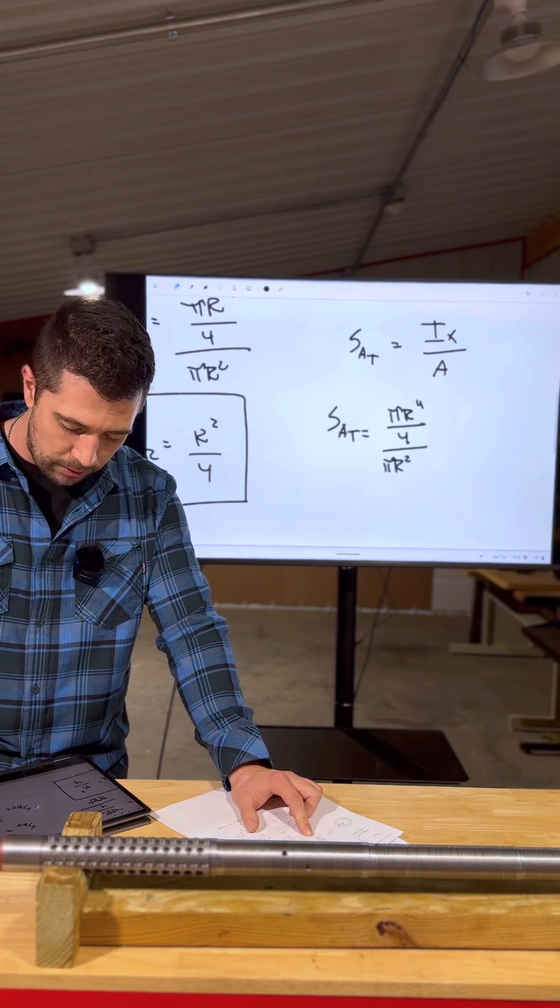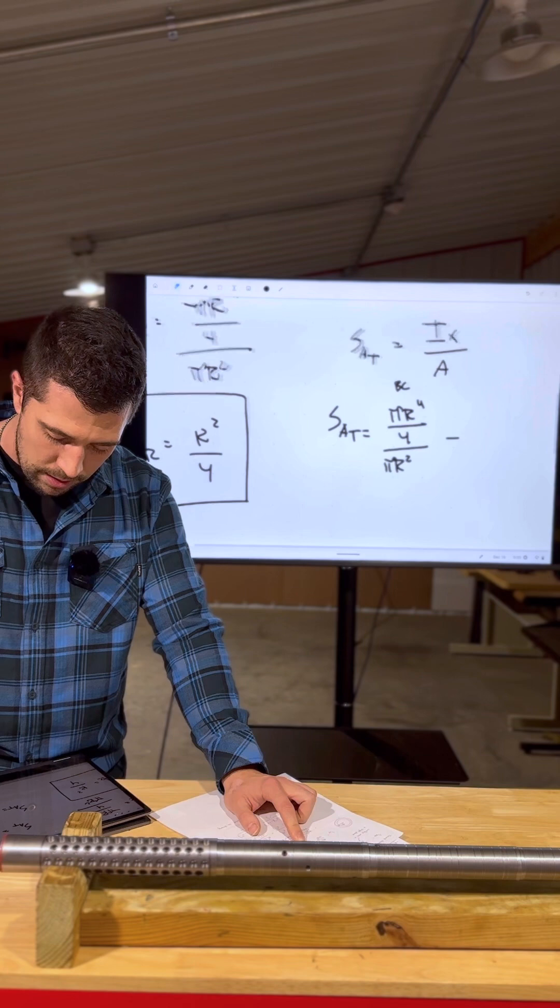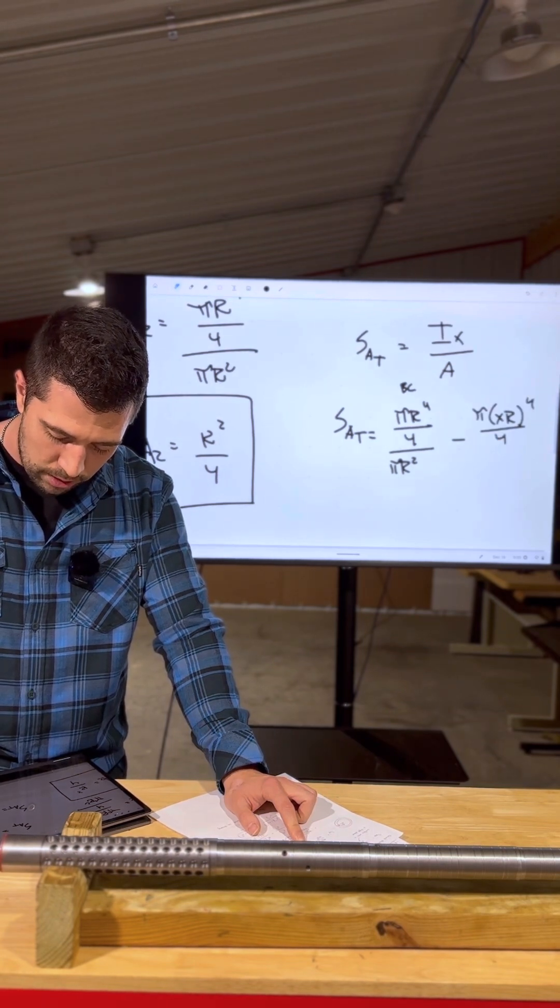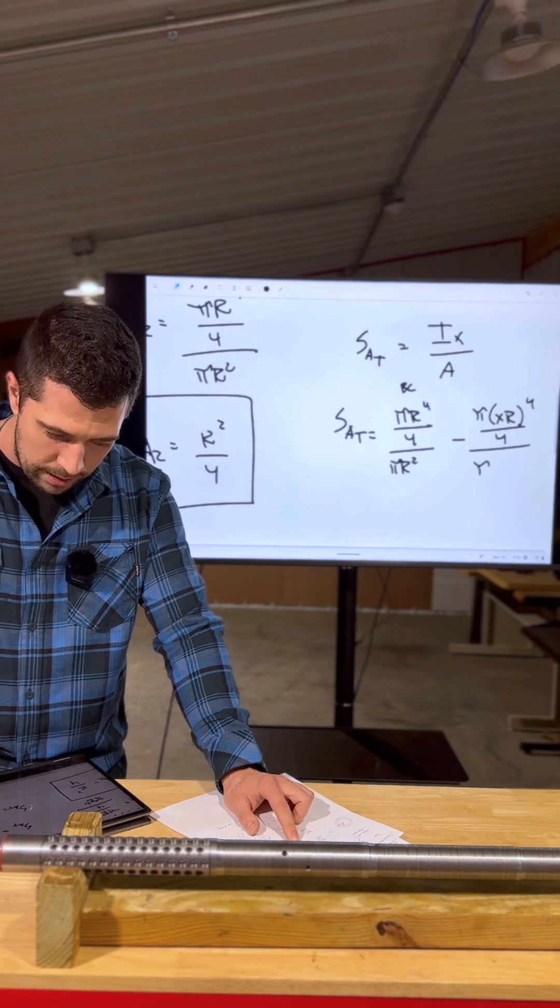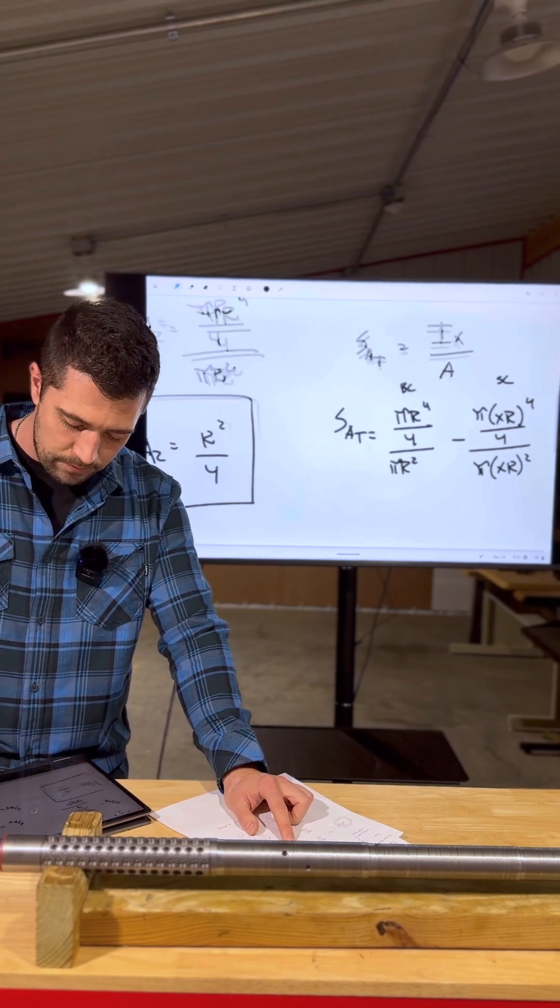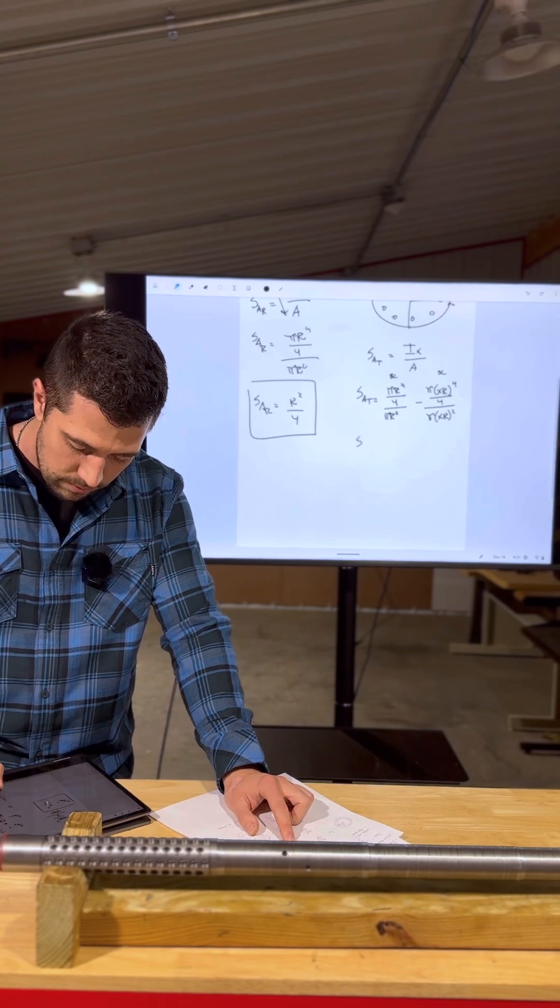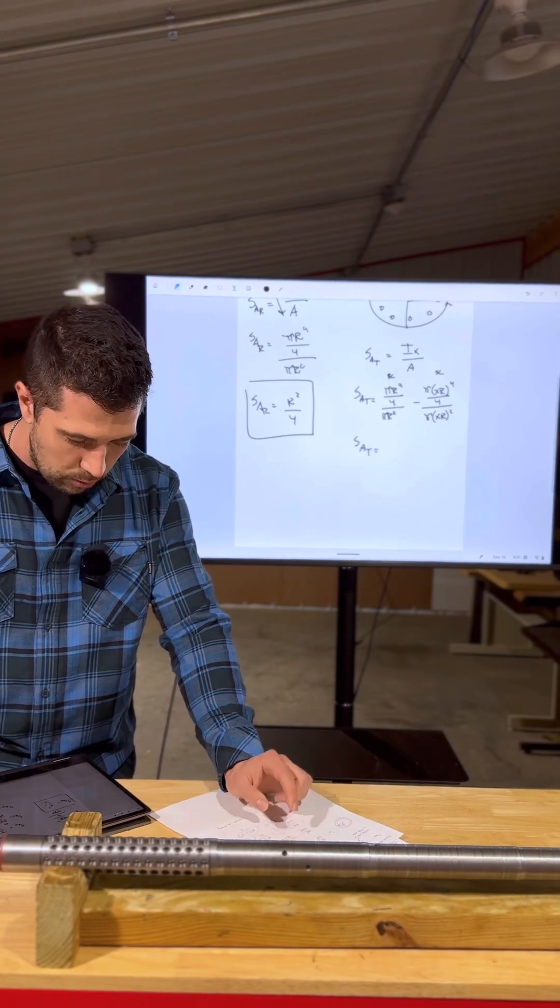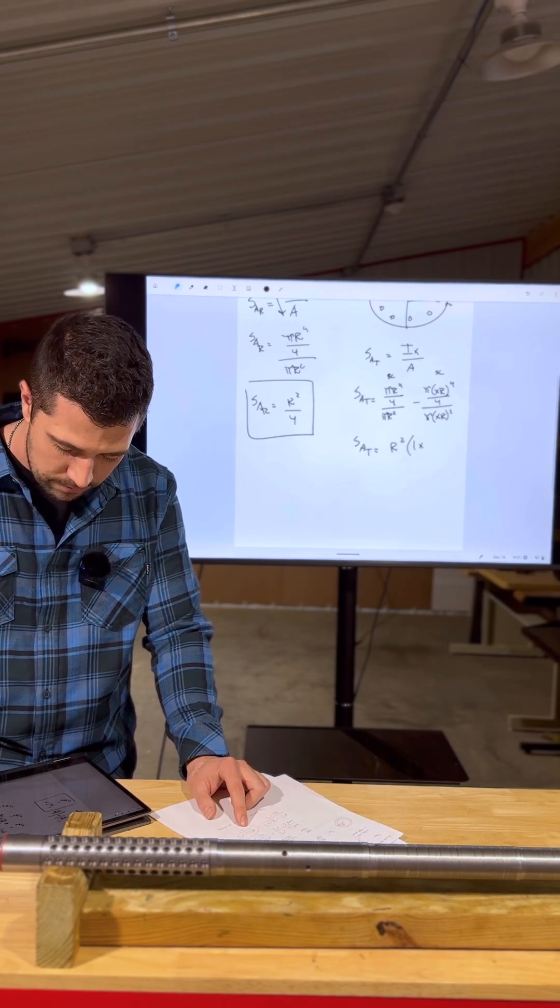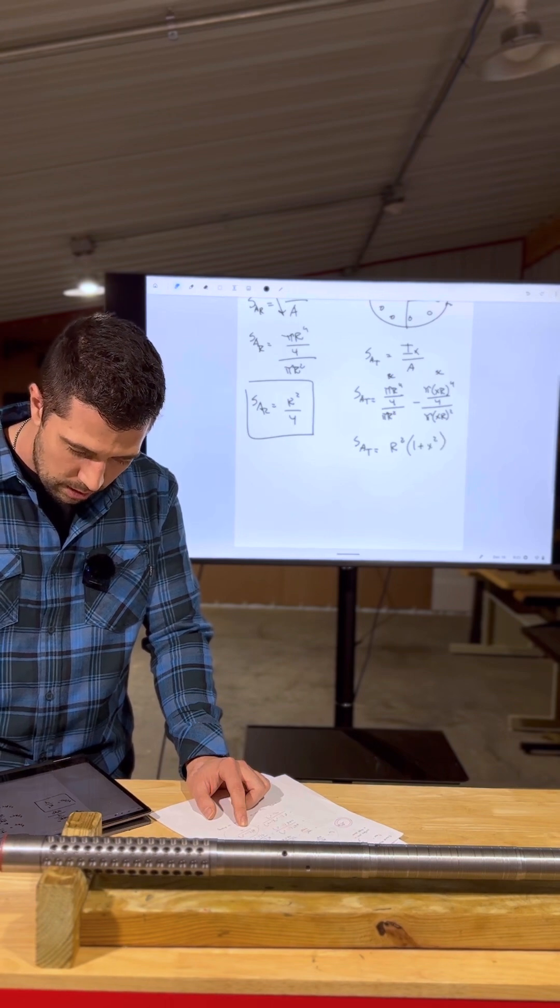So here's our big circle. And we're going to subtract this from πxr to the fourth over 4 divided by πxr², small circle. And when that simplifies, we get R² times 1 plus x² over 4. And this is where things get real interesting.